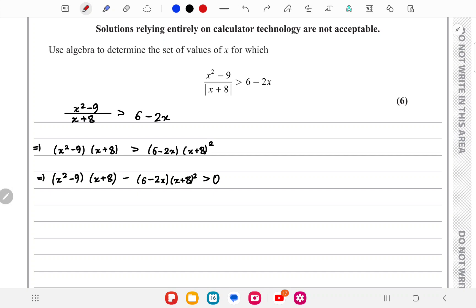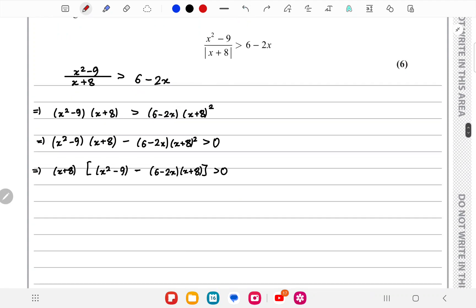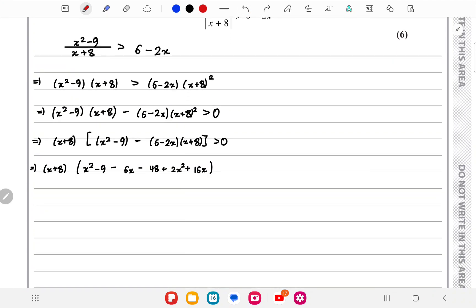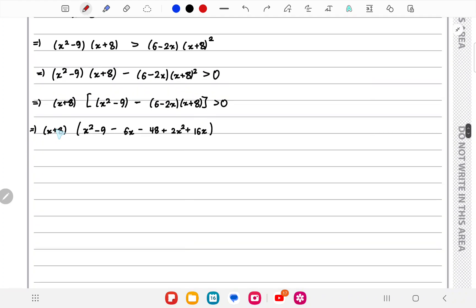Instead of expanding the whole term and getting a cubic that we'd have to solve, we can just move it to the left-hand side and take (x+8) as common. We'll get x² - 9 - (6-2x) times (x+8). Now we'll have a quadratic that's much easier to work with. Another issue would be that if you solve cubics directly using a calculator, you wouldn't get marks because it's not really allowed. So now we continue.